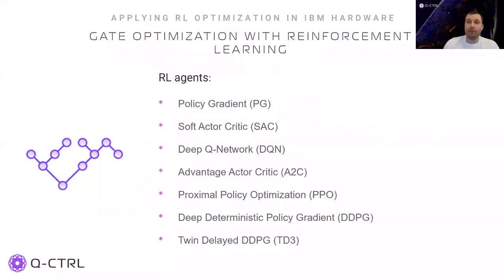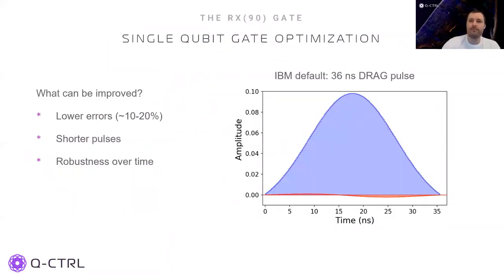I don't have time to cover the theory of different reinforcement learning algorithms in detail. We explored different algorithms including several listed here. Now we will explore the optimization of a single qubit gate. The gate we chose is the RX90. It's a very basic gate, and any single qubit rotation can be generated using RX90 and Z-rotations, which on the IBM device are virtual and therefore ideal gates.